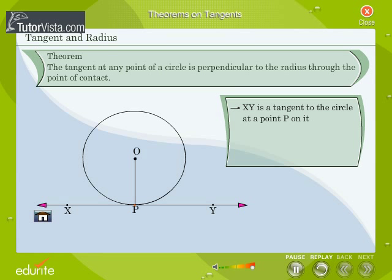To prove that OP is perpendicular to XY. Construction: Take a point Q on XY other than P.